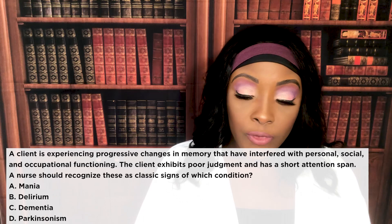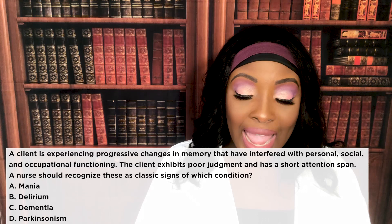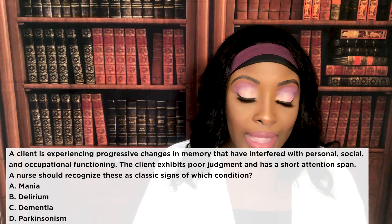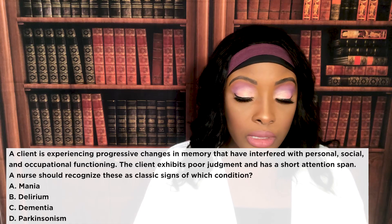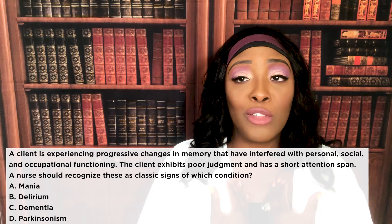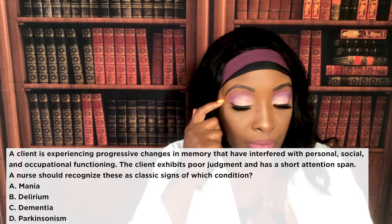A client is experiencing progressive changes in memory that have interfered with personal, social, and occupational functioning. The client exhibits poor judgment and has a short attention span. The nurse should recognize these as classic signs of which condition? A: Mania. B: Delirium. C: Dementia. D: Parkinsonism.